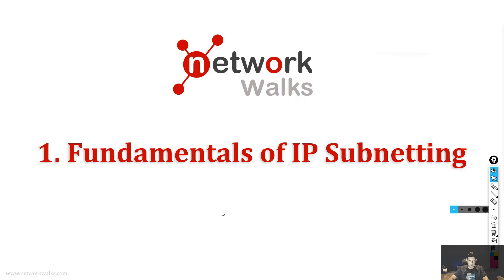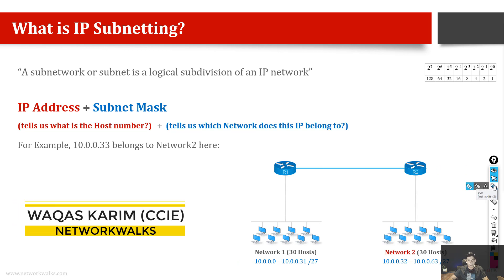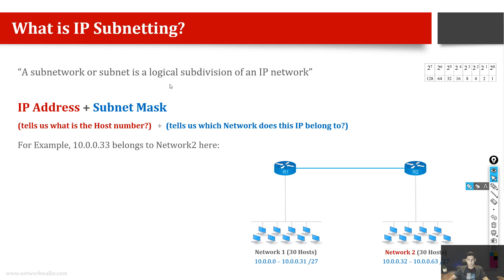Let's discuss some basics of IP subnetting — why we need it and what are the advantages. IP subnetting is the process of dividing a big network into smaller subnetworks. A subnetwork or subnet is a logical subdivision of an existing IP network. For example, if we have 254 hosts in a network and we divide it into two networks of 128 each, this is called subnetting — further dividing a network.